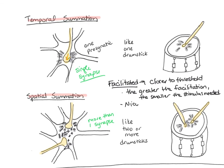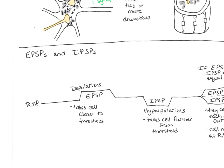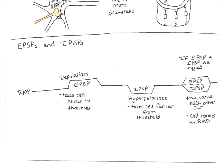Nicotine stimulates postsynaptic acetylcholine receptors, producing prolonged EPSPs so those neurons are facilitated and closer to threshold. Caffeine lowers the threshold at the initial segment, making a stronger stimulus necessary to reach threshold. If EPSPs and IPSPs are equal, they cancel each other out and the cell remains at resting membrane potential. Both EPSPs and IPSPs summate either spatially or temporally.